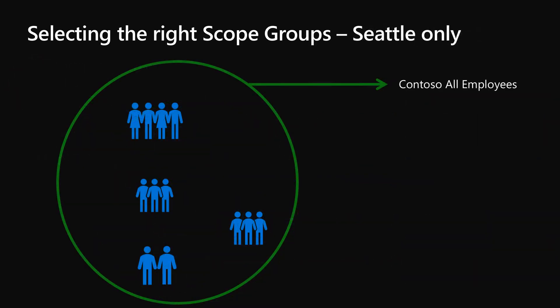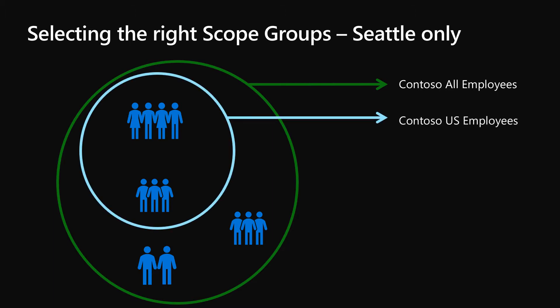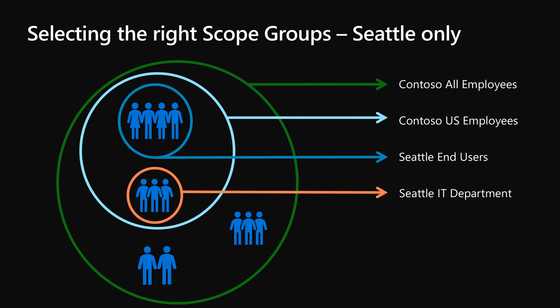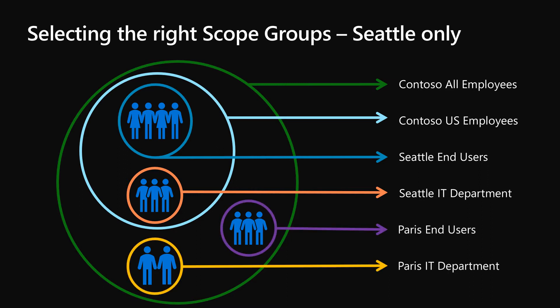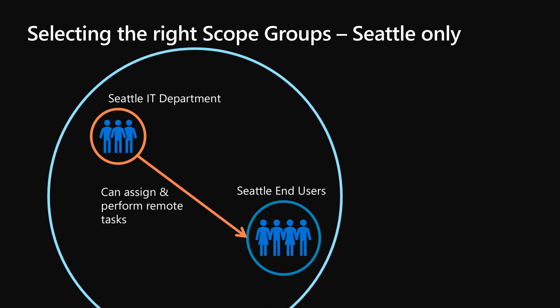Now let's say that you have a Seattle IT department. Here we have Contoso all employees, but we want to ensure that our Seattle IT department is only managing the Seattle employees. There's a nested security group called Contoso U.S. employees, and within that I have Seattle end users and Seattle IT department. Because Contoso is worldwide, I also have Paris end users and a Paris IT department. For this purpose, we're going to ensure that the Seattle IT department has a role assignment that only contains Seattle end users as its scope group. That ensures that Seattle IT members can only assign and perform remote tasks against Seattle end users.